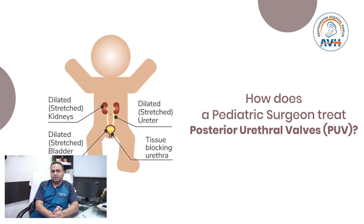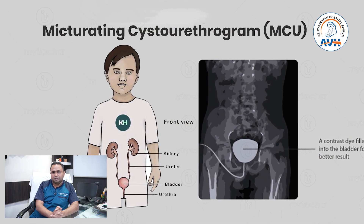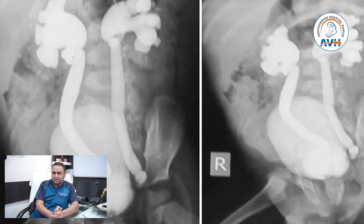After the birth of the child, we start treatment in the form of workup. The first workup we do is a micturating cystourethrogram — in short, known as MCU. It is a special type of X-ray in which water-soluble contrast dye is injected using a feeding tube into the bladder of the patient through an infant feeding tube transurethrally, and we take X-rays at different angles to diagnose it.